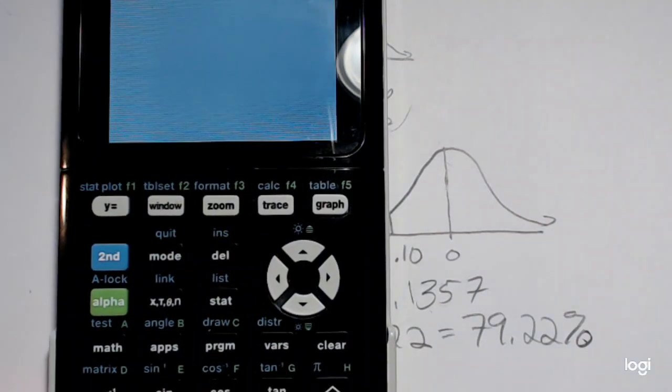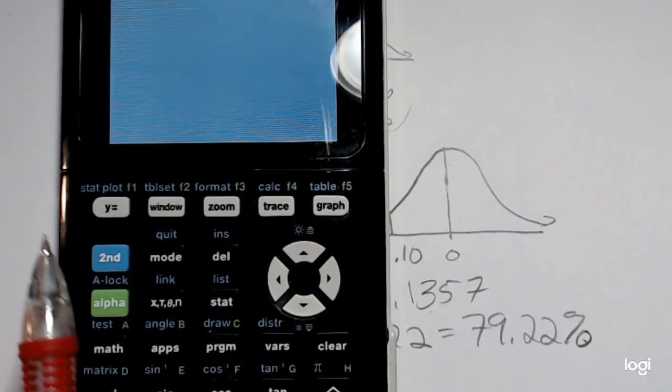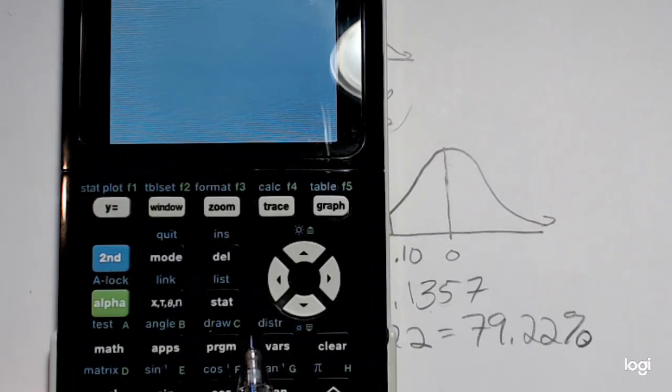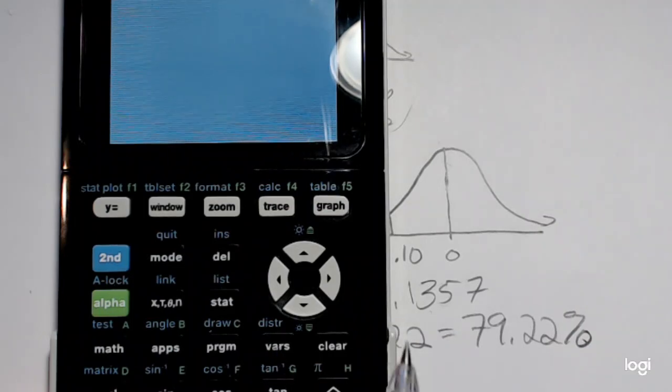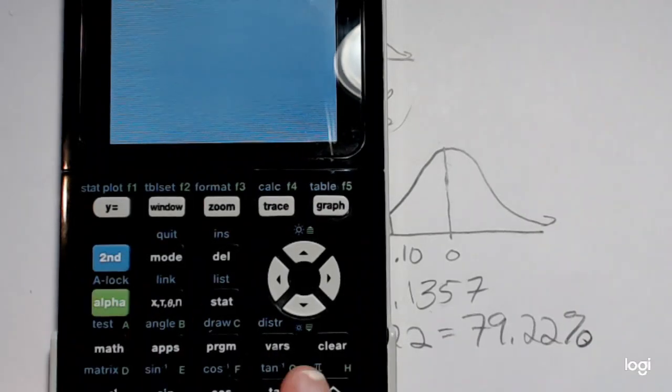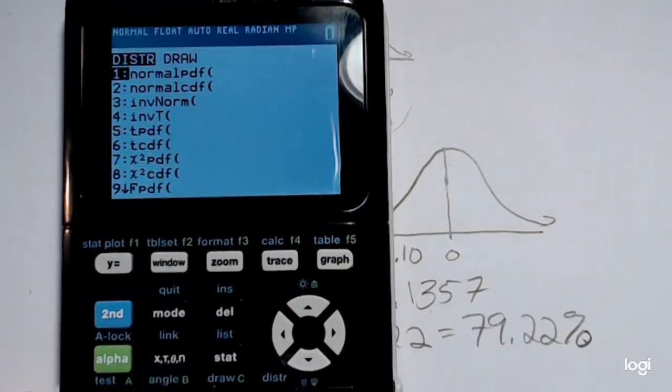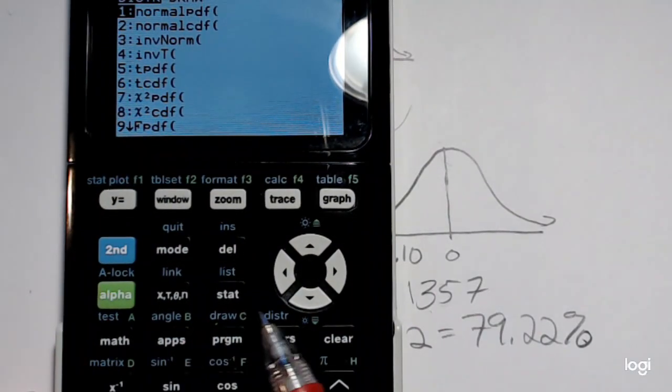The place you want to go on a TI-84 calculator is this distribution function or menu right here. It's right above this VARS key. So pressing second and the VARS button, that'll get me to my distribution menu.